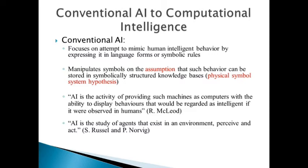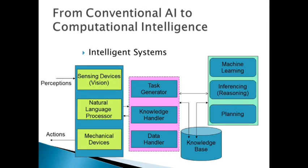To summarize conventional AI: its main focus is on human intelligent behavior, expressing it in language form, and manipulating symbols based on assumptions stored in structured knowledge bases. From conventional AI to computational intelligence, the intelligent system recognizes a particular problem through sensing perceptions via sensor devices, natural language processing, and mechanical devices to provide a solution.